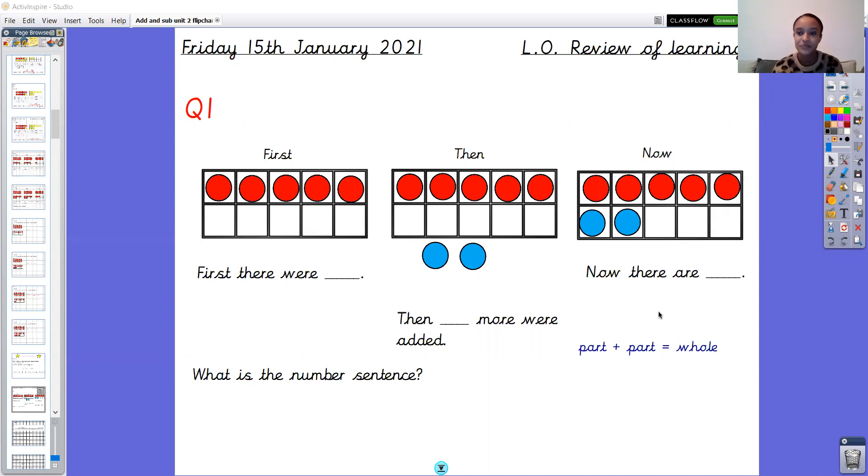Okay so question one, we're starting off with what we did on Monday. So we've got adding by counting on. We've got three sentences with missing numbers and then we've got the what is the number sentence question at the end. First there was something, then something more were added, now there are something, and what is the number sentence. Pause the video now and have a go at that one.